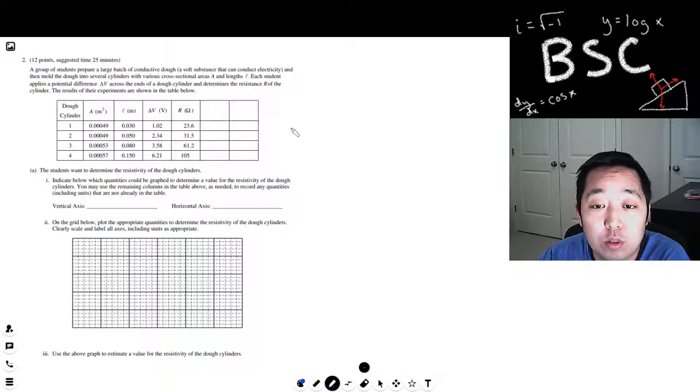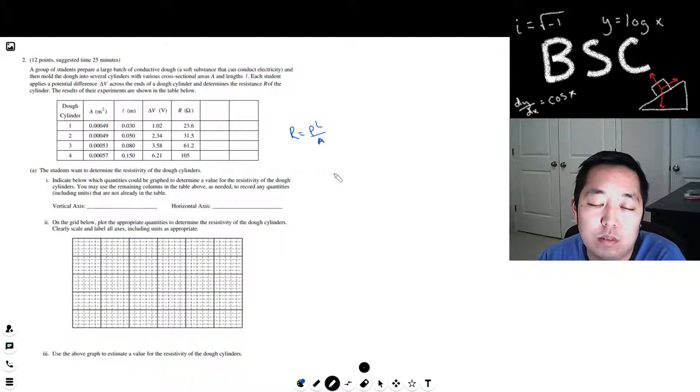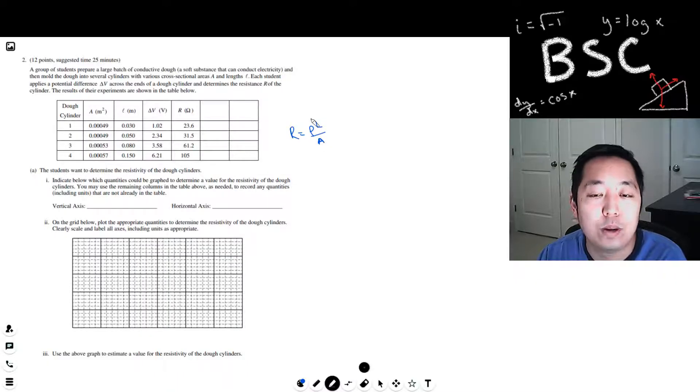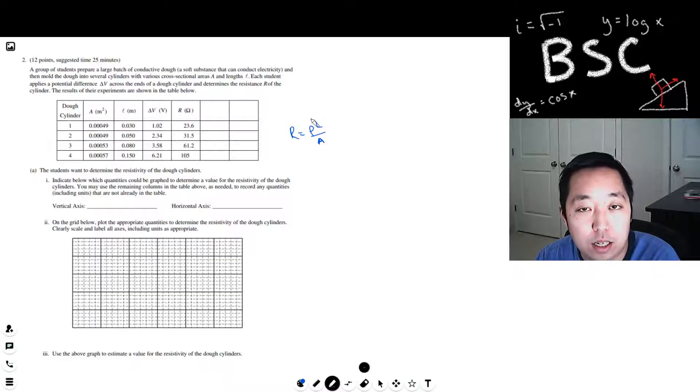Okay, so this is our basic equation. Resistance is rho times length over cross-sectional area, and they want to find rho. The way you always want to think of these is you're going to draw it as a line, do a best fit line kind of thing. So the first thing is I want rho to be the slope of some line that I'm going to plot data on.